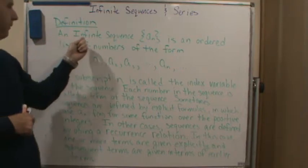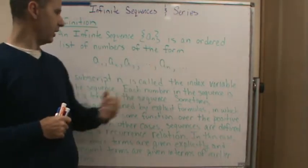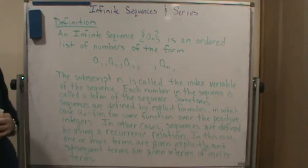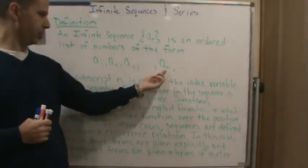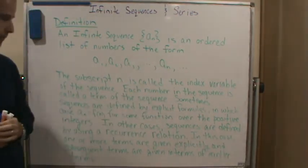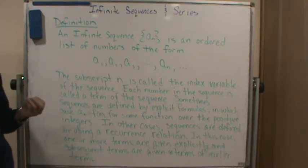So again, an infinite sequence denoted by this symbol is an ordered list of numbers of the form a1, a2, a3, through a sub n, and so on. So there's an infinite number of terms in the sequence.